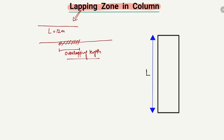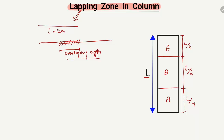In our case we will show where we can overlap our steel bars in the column and what is the overlapping length for the column. The lapping zone in the column is defined as follows: if L is the length of the column, the column is divided into three portions. The top and bottom portions are known as the A region, and the middle portion is known as the B region. The length of each A region is L/4, and the length of the B region is L/2, so the total length is L.